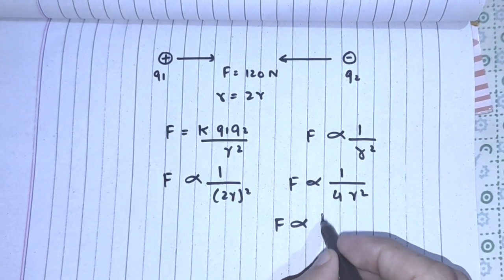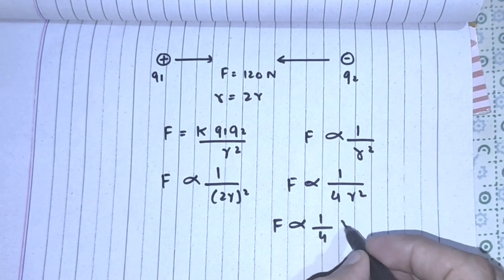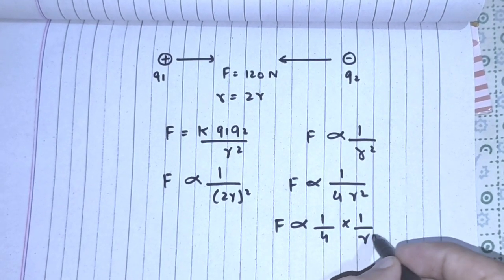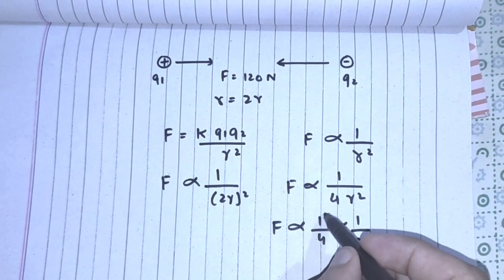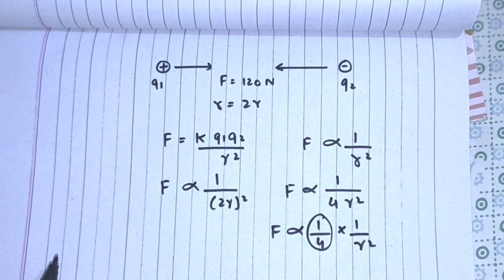Or we can write it as 1 by 4 cross 1 by r square. It means that the force will be decreased 4 times.